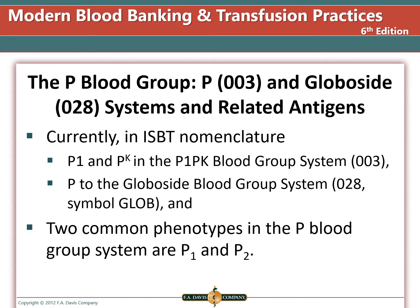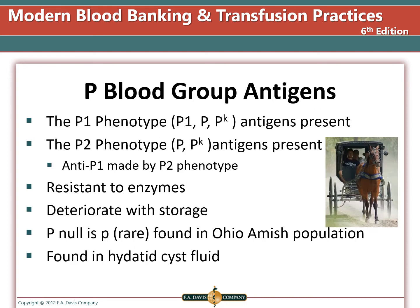The P blood group: in current ISBT nomenclature, P1 is assigned to the P blood group system, number 003. P is the globoside blood group system, number 028. Two common phenotypes are P1 and P2. A person with the P1 phenotype will have P1, P, and PK antigens on their cells. A person with the P2 phenotype has P and PK antigens but lacks the P1 antigen.